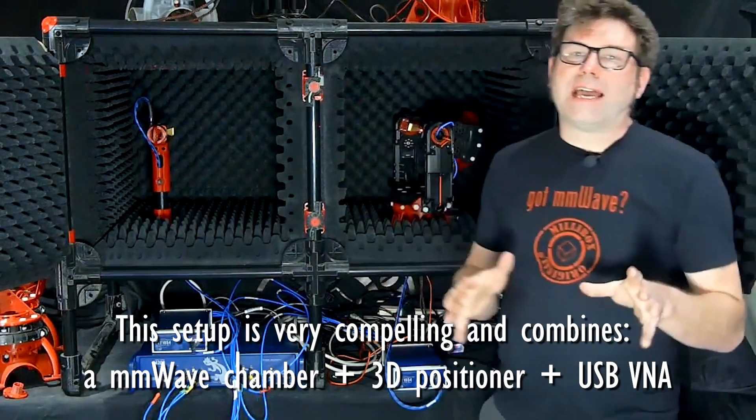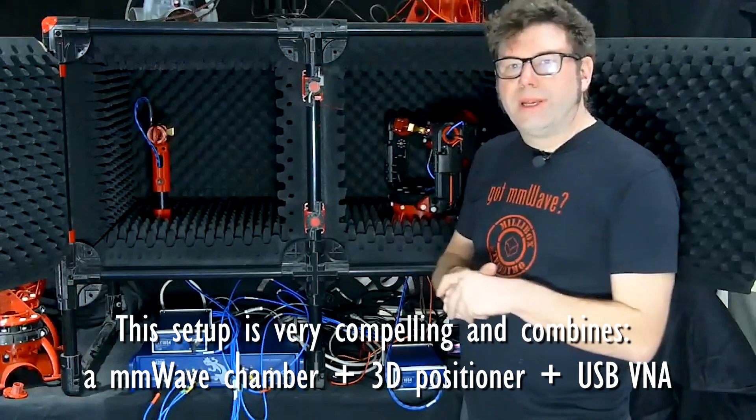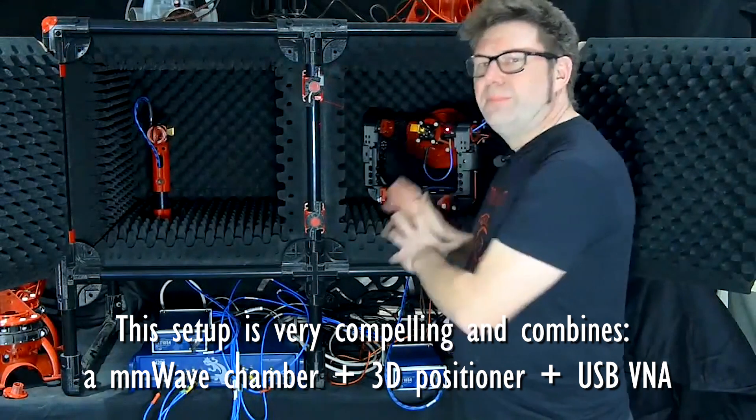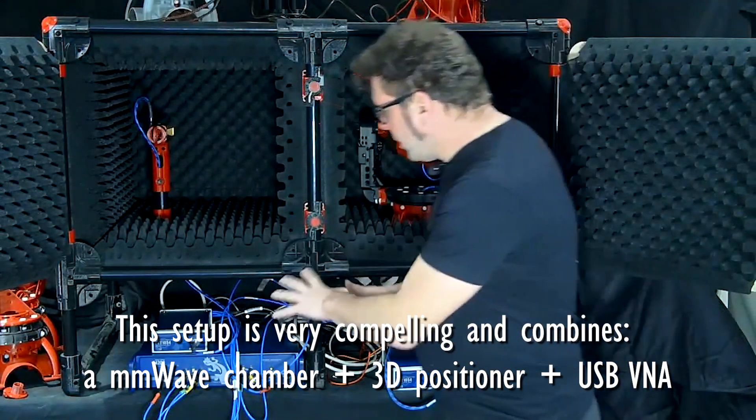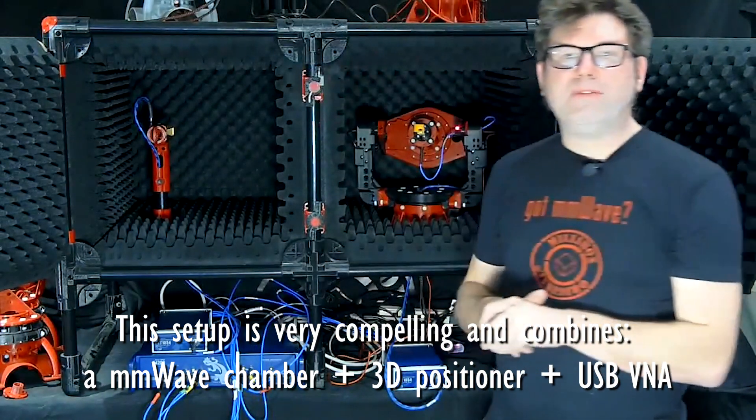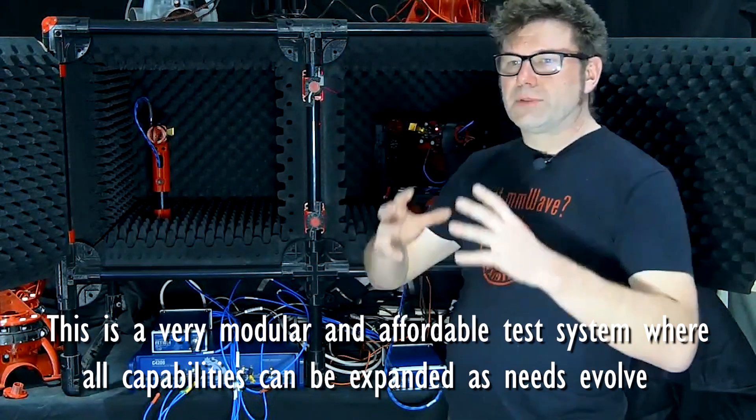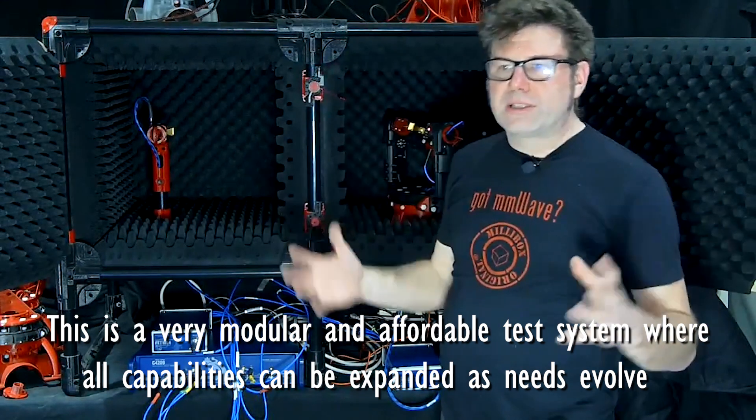So as you could tell, we have here a pretty compelling setup with a millimeter wave anechoic chamber, plus a 3D positioner, plus a Cobalt USB VNA. This setup probably gives you the most modularity in terms of, you know, you can extend the Millibox size, you can extend the DUT capacity.